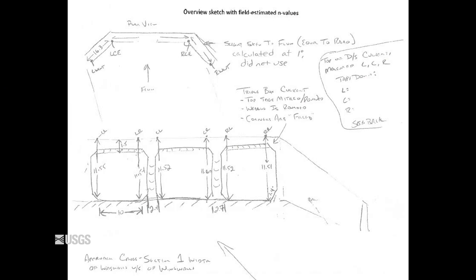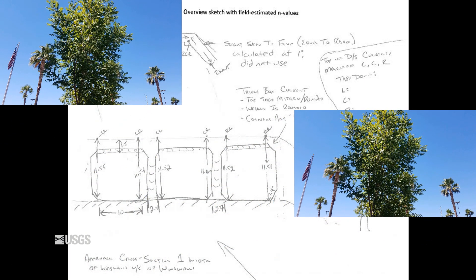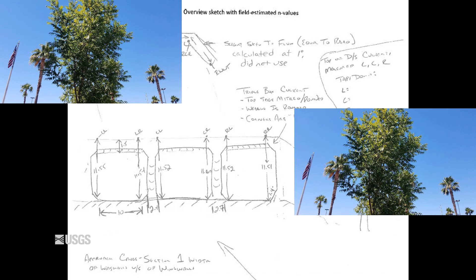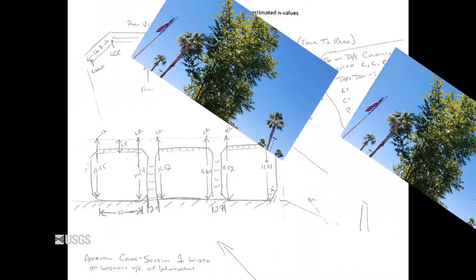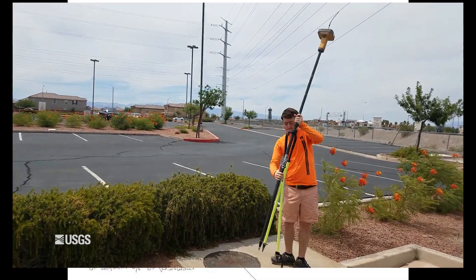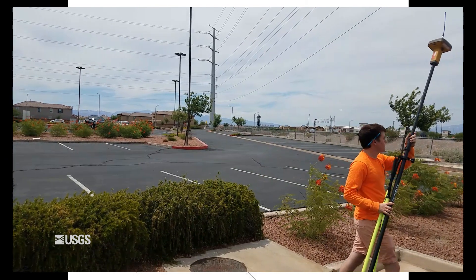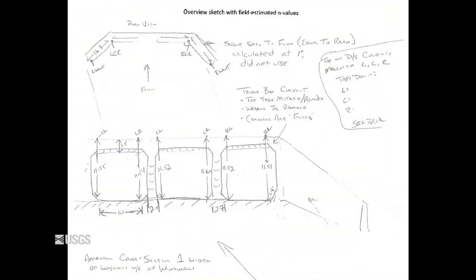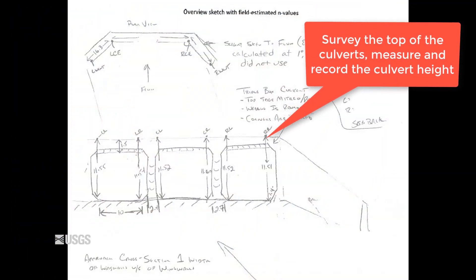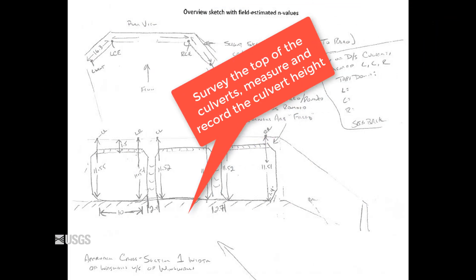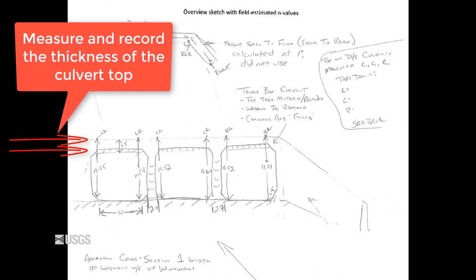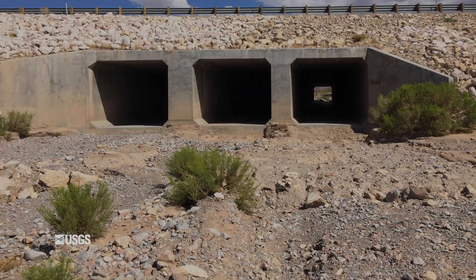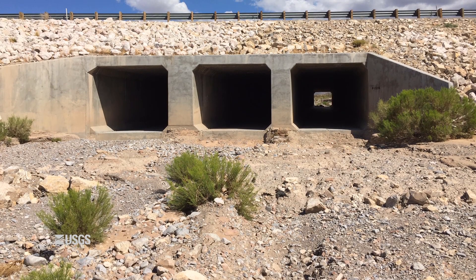Sometimes the inverts cannot be directly surveyed because of obstructions such as trees, or the culvert barrel itself sticking out too far, not allowing you to hold a rod level. With GPS surveys, often you have poor satellite coverage due to the embankment blocking a portion of the sky. If this is the case, the top of the culvert can be surveyed and the culvert height subtracted to determine the invert elevation. However, the additional thickness of the culvert top or material needs to be taken into account. This should also be clearly noted in the survey notes.